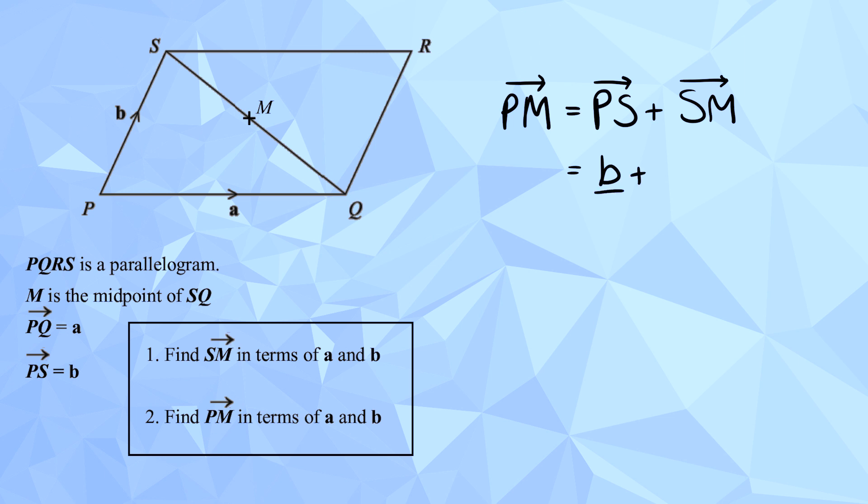And then plus half, my negative half b, and plus half a. Yeah. That bit that we just worked out. So, you're going to do it from P to S, which is b, positive b, and then you're just going to add on the bit that we just worked out, the S to M, which is negative.